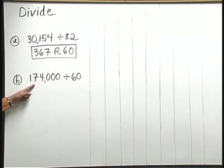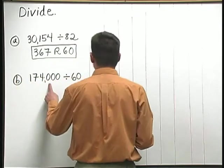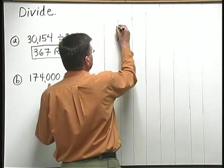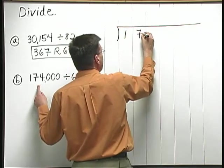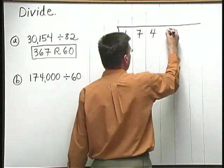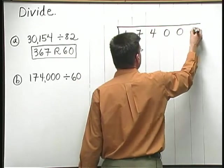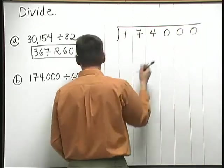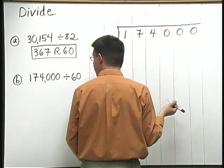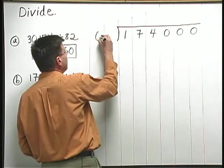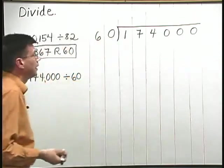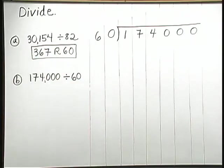Let's move on to B now and do 174,000 divided by 60. To set up the long division box now, I need to place 174,000 on the inside. 174,000. I don't need to write the comma if I don't want to inside the long division box. Out front, I have 60.